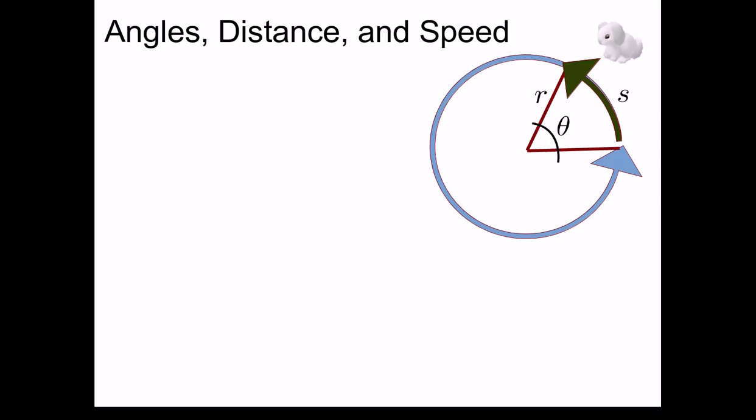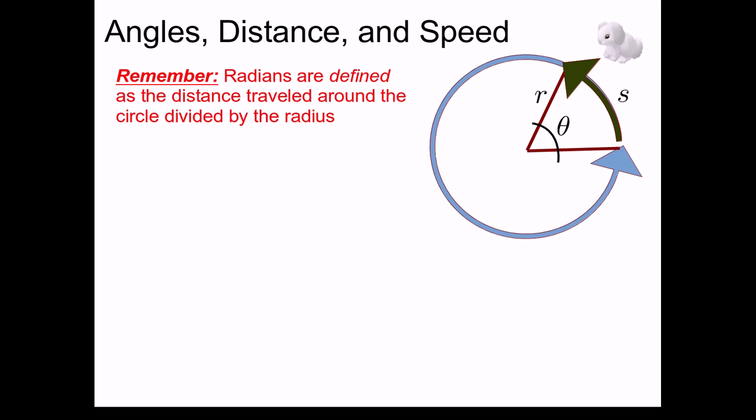How are s, the radius of the circle, and the angle theta, related? Well, remember, radians are defined as the distance traveled around the circle divided by the radius. So the definition of theta in radians is going to be s over r, or written slightly differently, s equals r theta.